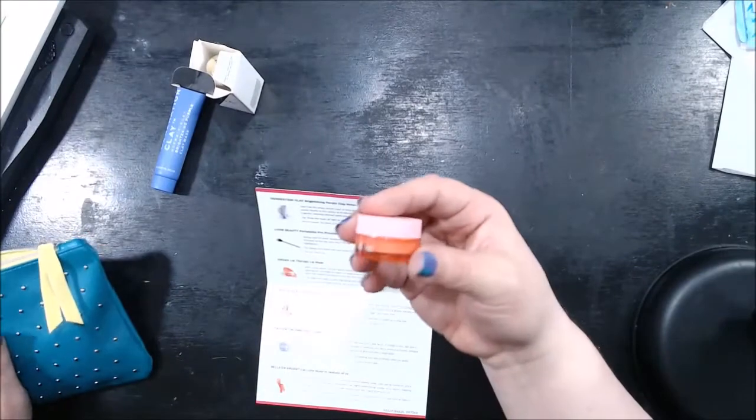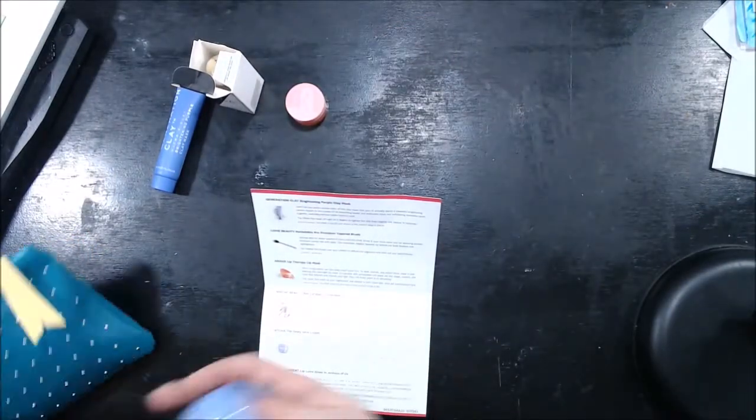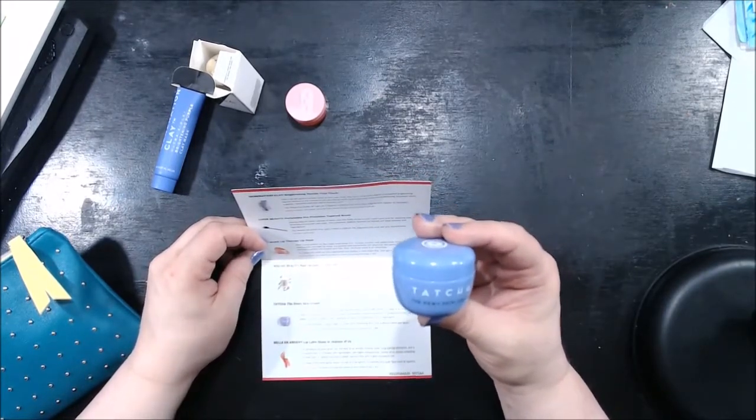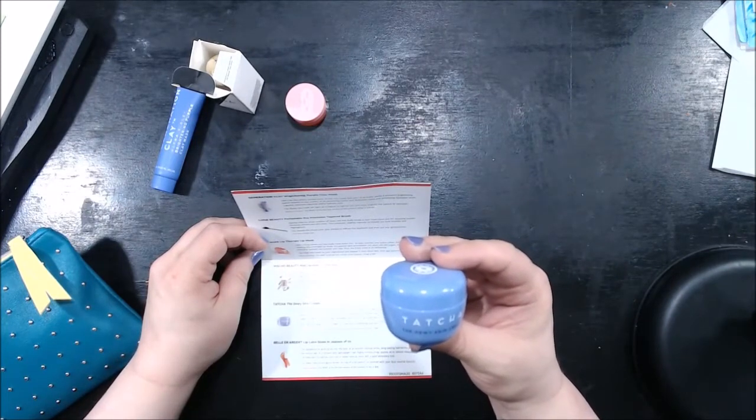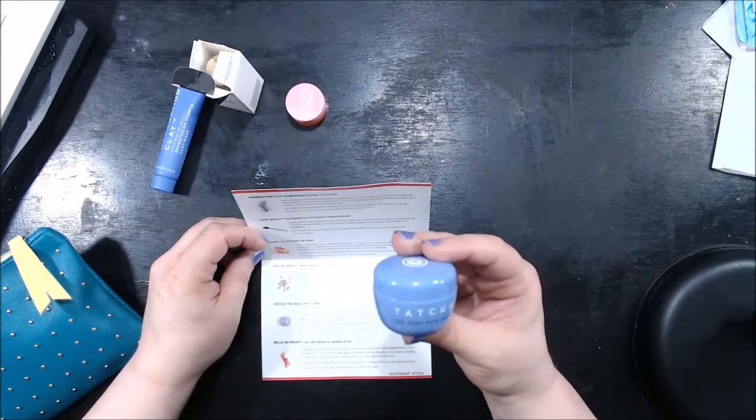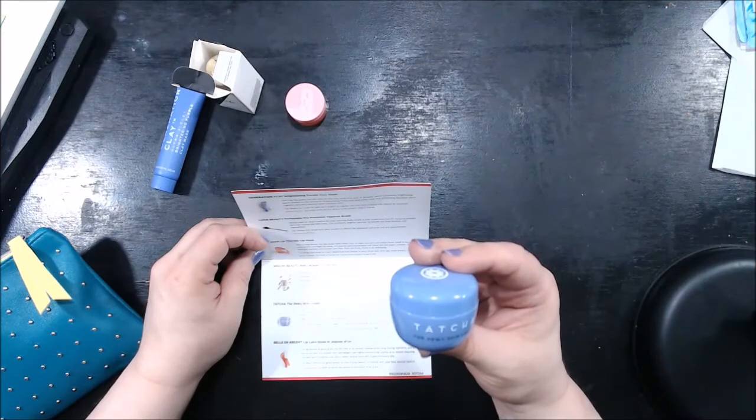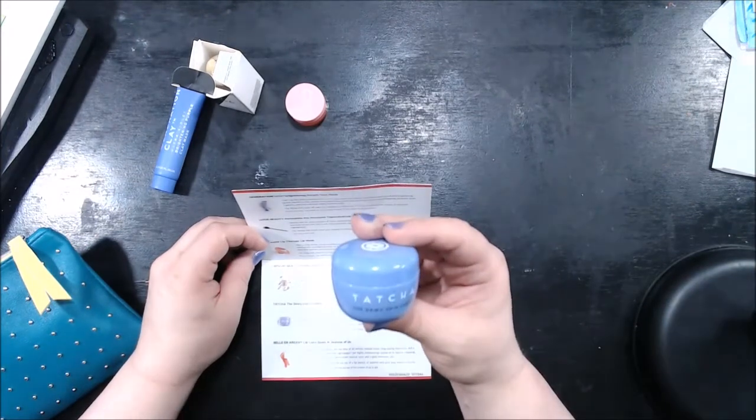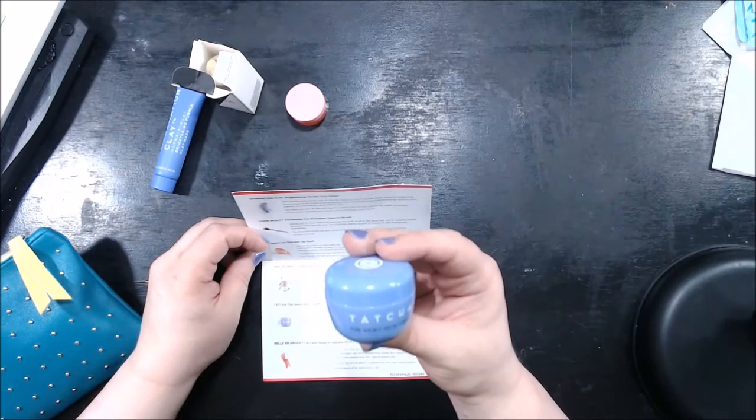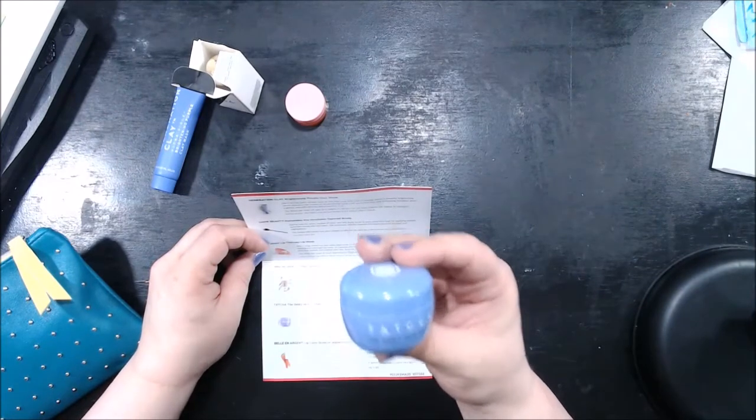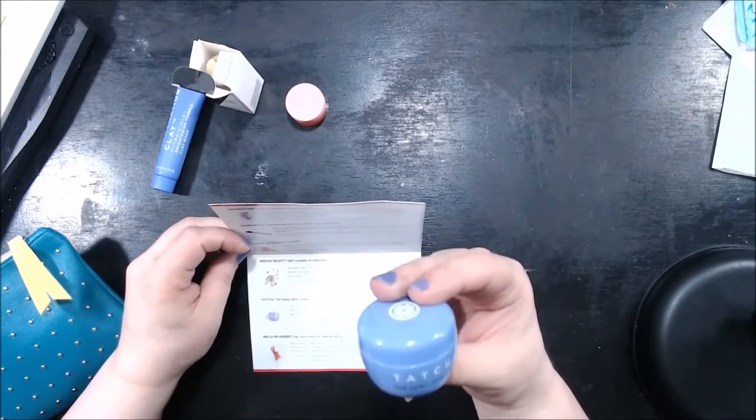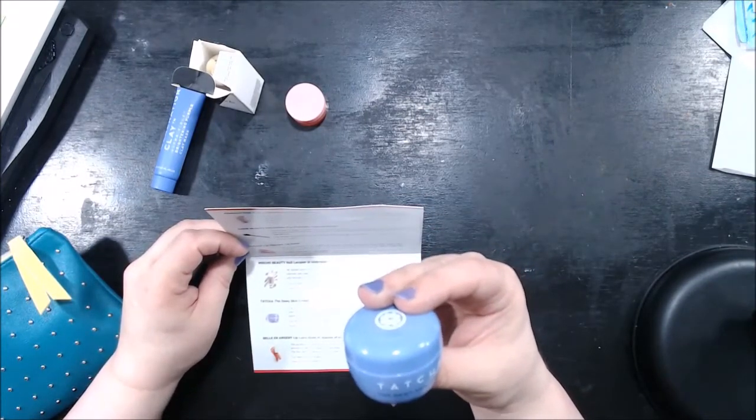Then we've got Tatcha The Dewy Skin Cream. True to its name, this luxury cream majorly ups your skin's dew factor. It's ideal for dry, dull skin in need of extra TLC. It packs ceramides to reinforce your skin's protective barrier. Algae draws moisture and the purple Japanese purple rice gives your skin major glow. Pop this cream in your refrigerator, it feels extra refreshing and calms puffiness when you apply.